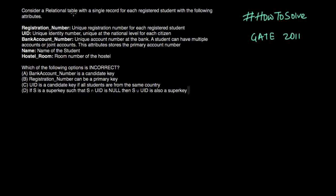Consider a relational table with a single record for each registered student with the following attributes. So we have been given few attributes. First one is registration number. So registration number is unique registration number for each registered student.